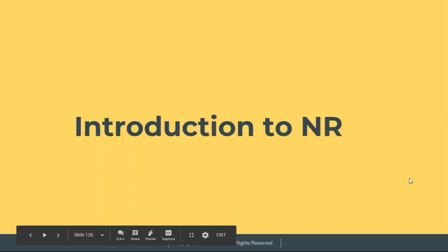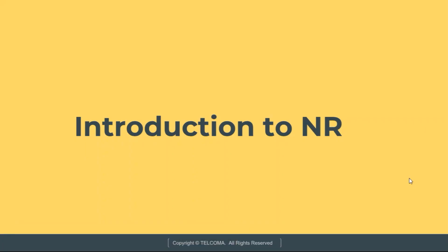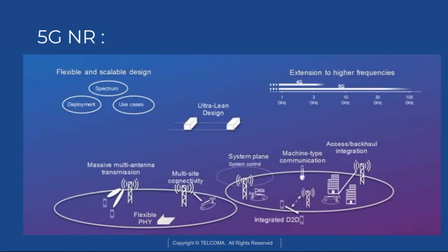Now let's have an introduction to NR. Parallel to the evolution of LTE, new radio access technology — New Radio (NR) — is not constrained by backward compatibility. The target for this is new spectrum, and the main part of that spectrum will be available at higher frequencies, meaning above 10 GHz.